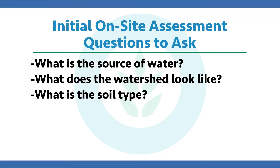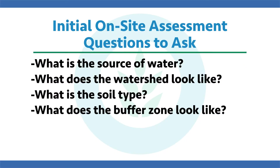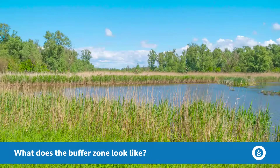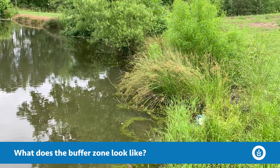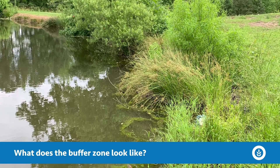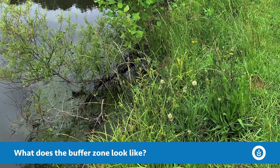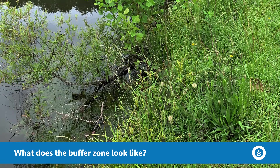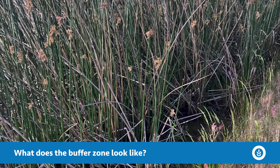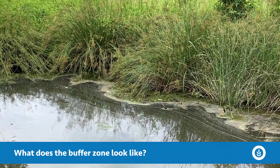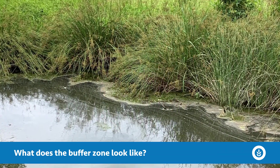The next thing to look for in the on-site assessment is the buffer zone. Is there a buffer of plants around the edge of the pond? If so, how much of the area does it cover? Is it near the inflows or just a small section, or does it go around the entire pond? What is that buffer zone comprised of — woody plants or vegetative plants? Are they potentially invasive or nuisance species like cattails, bulrush, or phragmites? Or are they beneficial native plants? Understanding the buffer — how big it is, where it's at, and what it's comprised of — is very important.